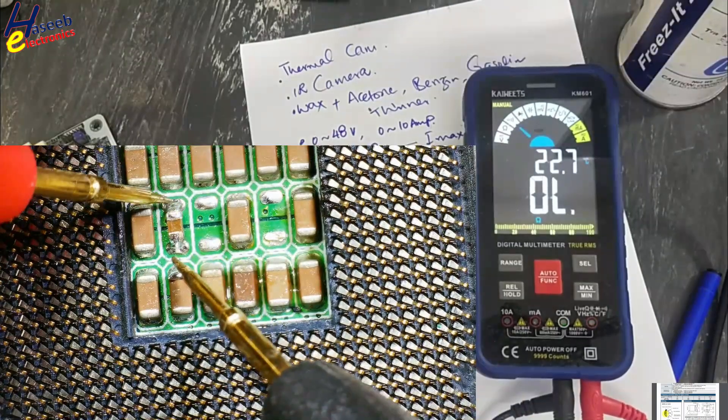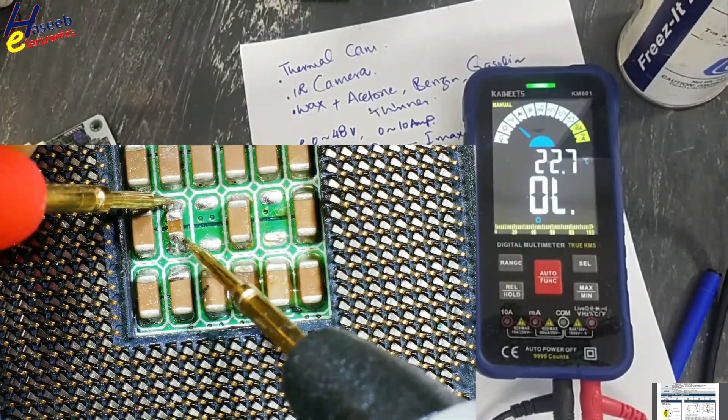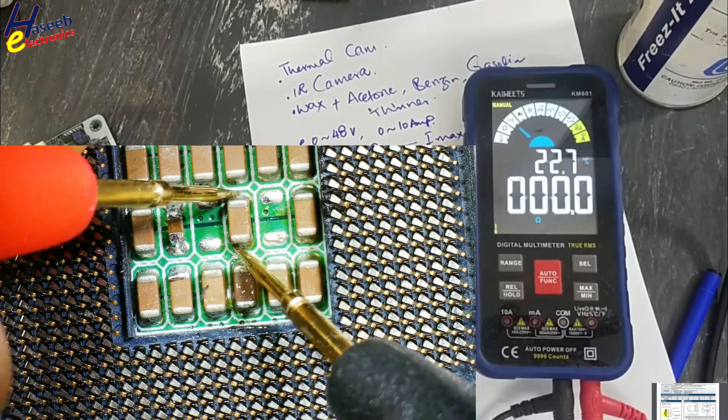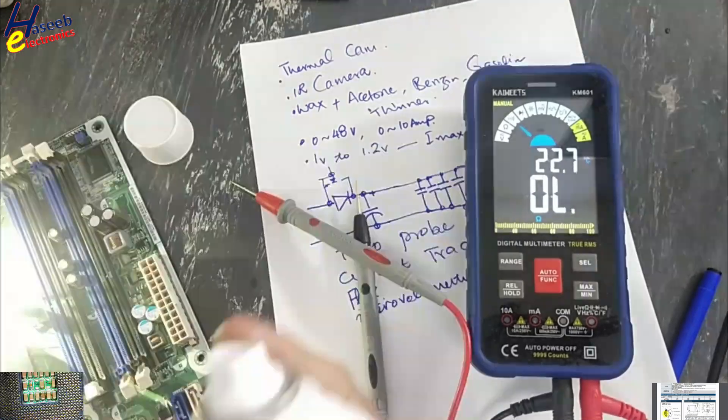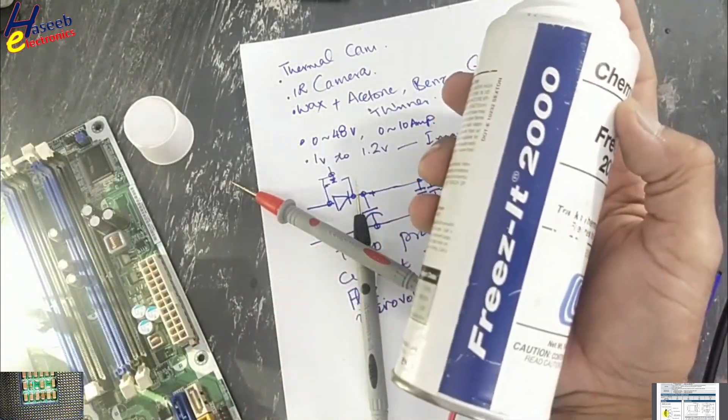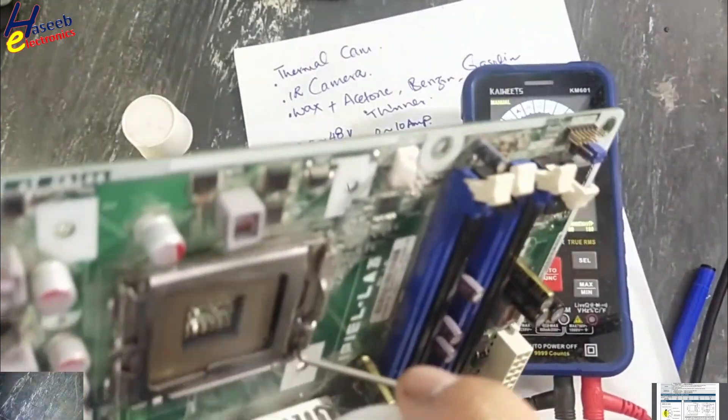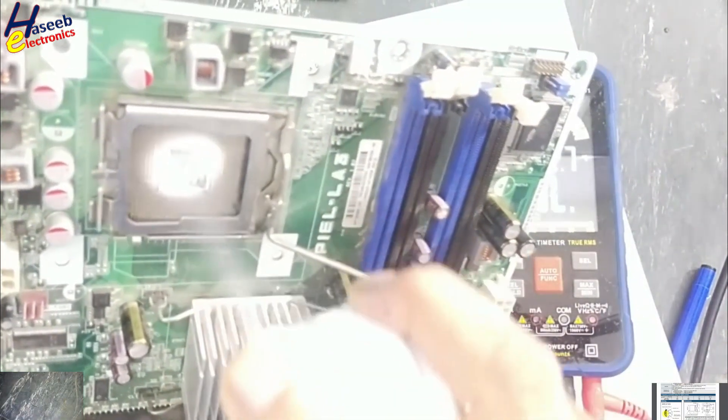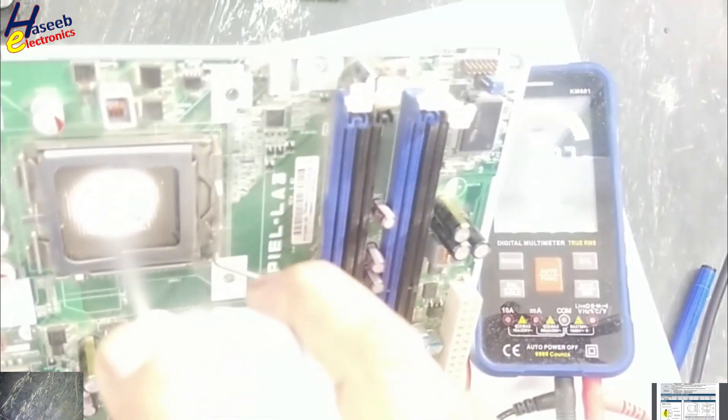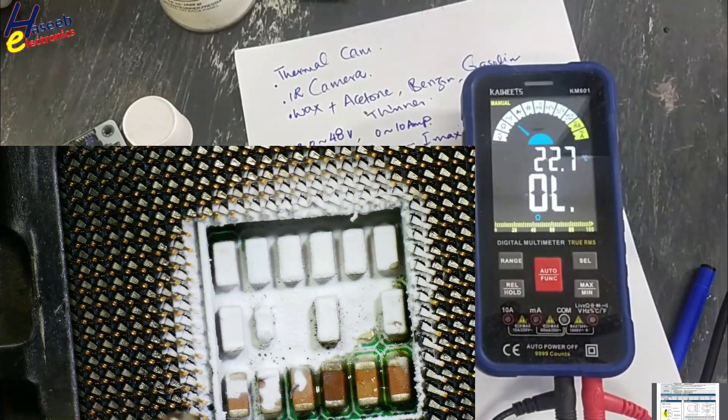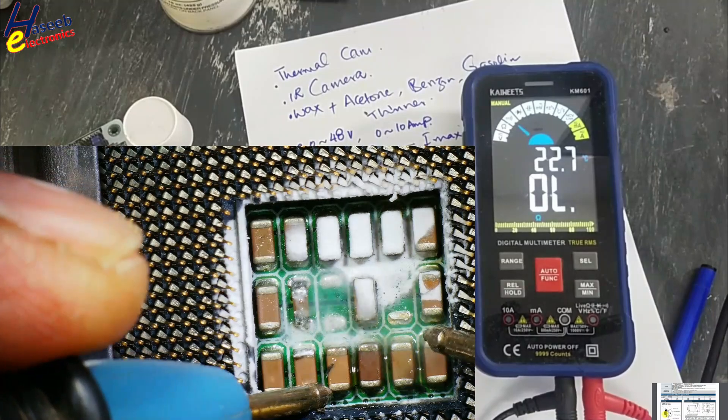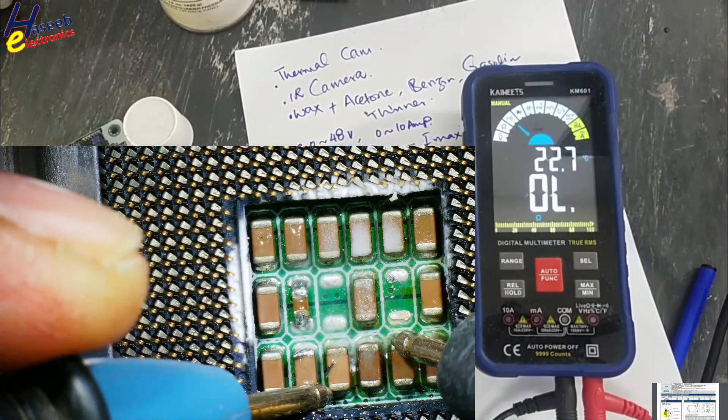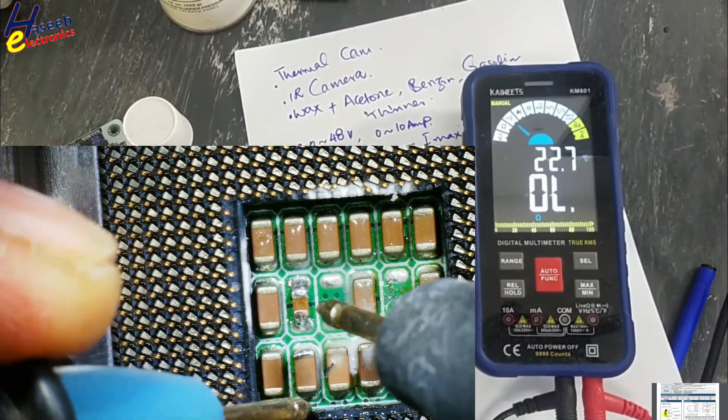Now I will check continuity. That means this time there is a short link. Now I will spray Freeze-It and now I will inject power with the same direction.